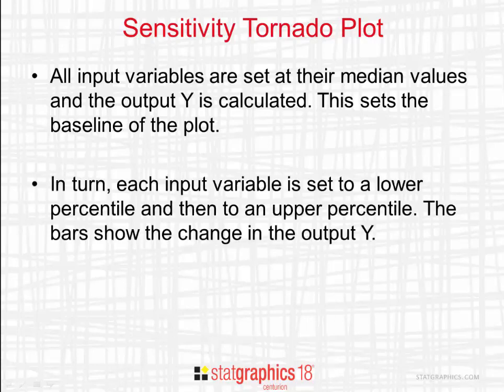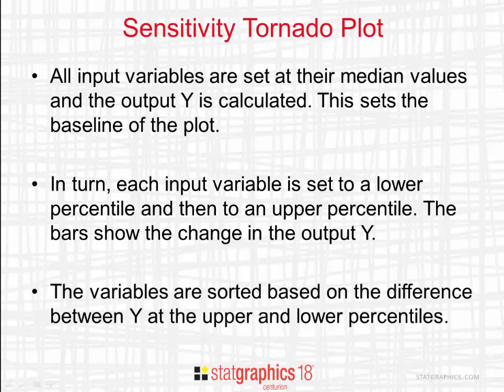We then take each of the input variables and set it equal to a lower percentile and then to an upper percentile — frequently the 5th percentile and the 95th percentile. We then draw bars to show how much the output changed when a particular input variable was set first at its lower percentile and then at its upper percentile. When the tornado plot is drawn, the variable at the top will be the one that had the biggest effect on the output, and the one at the bottom will be the one with the least effect.